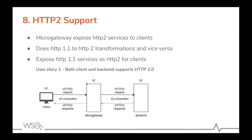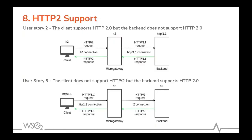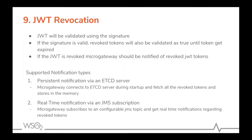Micro gateway supports HTTP/2 as well. In scenarios where both the client and backend support HTTP/2, both connections — client to micro gateway and micro gateway to backend — will be HTTP/2. If only the client supports HTTP/2 and the backend does not, the client-to-gateway connection will be HTTP/2 and the gateway will downgrade to HTTP/1.1 when connecting to the backend.